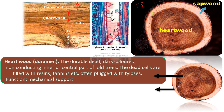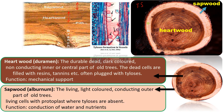Now let us see what sapwood is. Sapwood is the living, conducting outer part of all trees, which is light colored, composed of living cells with protoplasm, where thyloses are often absent — if present, there are very few. The function of sapwood is conduction of water and nutrients.